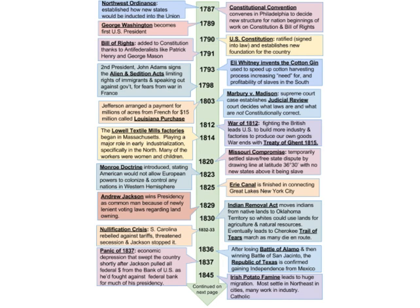In 1793, Eli Whitney invented the cotton gin, used to speed up cotton processing. The cotton gin increased the need for slaves and the profitability of slavery: you could produce more cotton, so if you had more slaves picking more cotton, you could produce more. The cotton would be shipped to northern factories and textile mills to produce cloth. The invention of the cotton gin increased the demand for slavery.